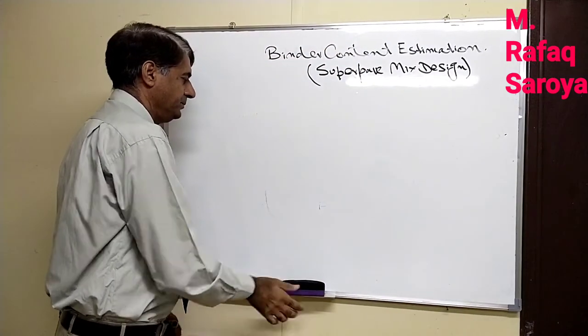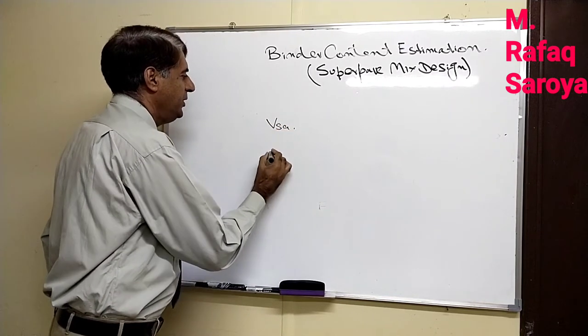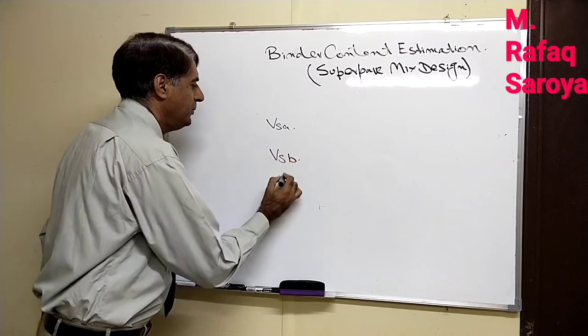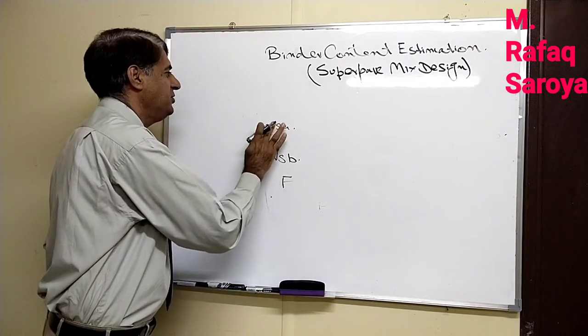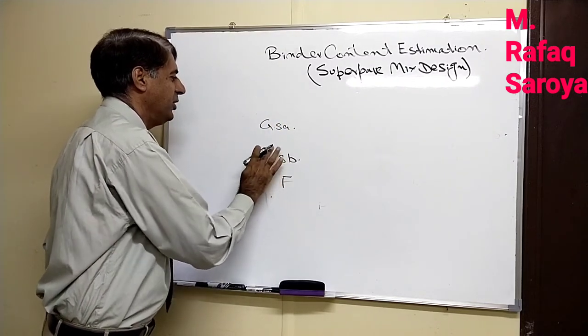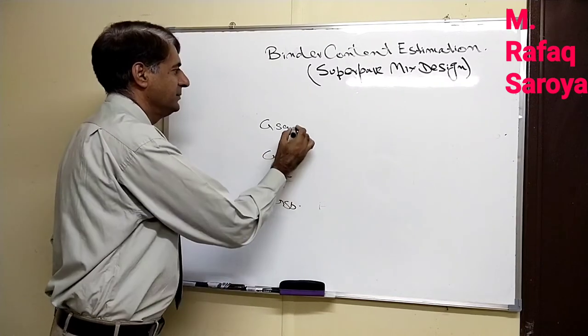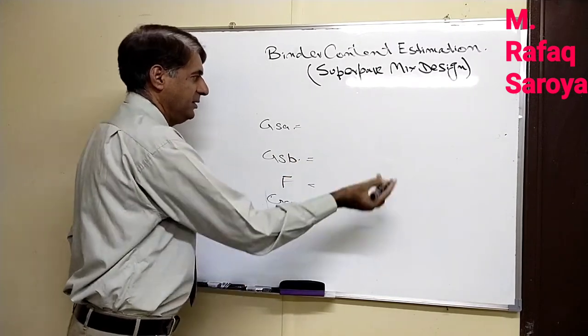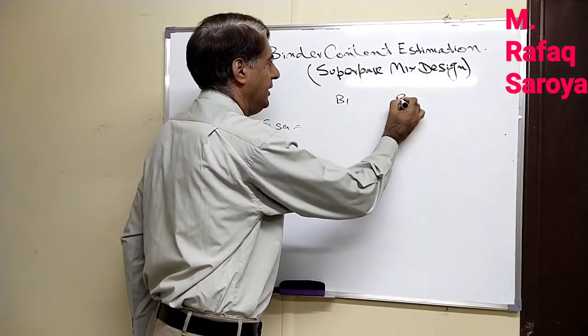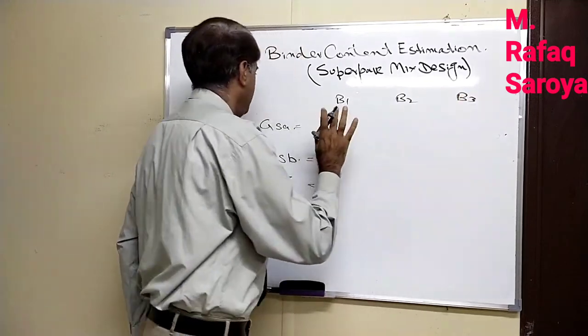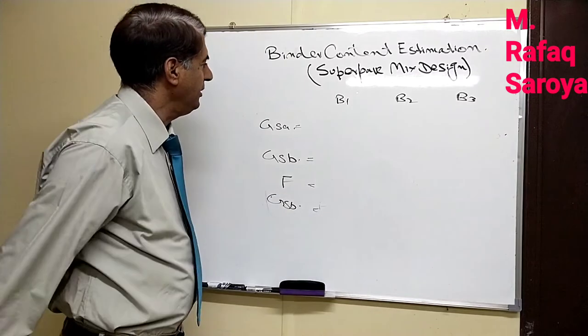You know, we have GSA, we have GSB, we have this factor F. From this we will calculate the GSE. Sorry, by mistake I have written V. So blend 1, blend 2, and blend 3. So keep this in mind, it is G not V. Sorry for writing this wrong, I have already rubbed it.